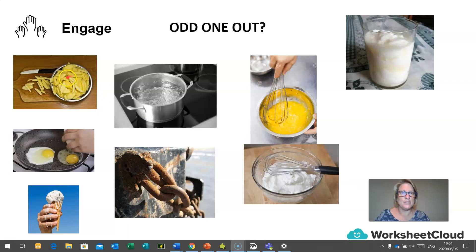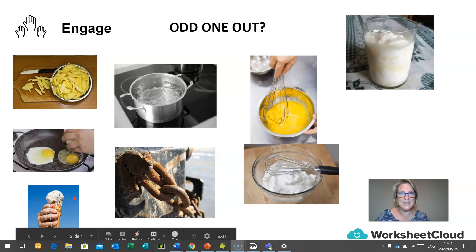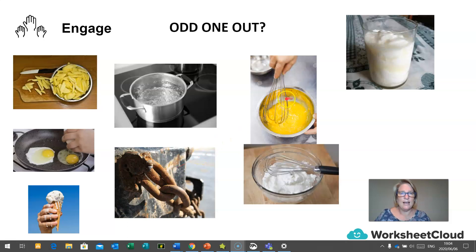So here we have potatoes that have been cut into chips. Here we have an egg, a raw egg that's been broken into a frying pan and the egg is cooking. Here we have an ice cream melting. Here we have a pot of water boiling. Here looks like we have a rusty chain. Here is a bowl of eggs that have been whisked and they're yellowish in color. And this is what happens if you whisk eggs for a very very long time. So this is raw eggs mixed together and this is raw eggs that have been whisked together. And here is a cup if you look really closely. This is a cup of milk, but the milk has started to go sour.